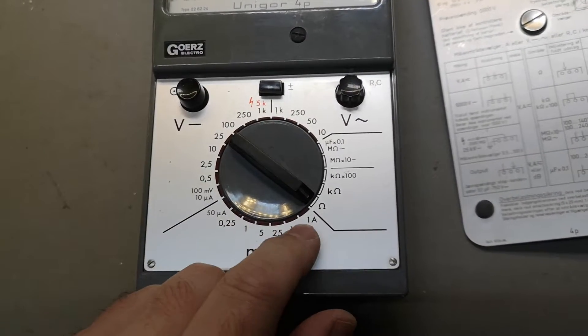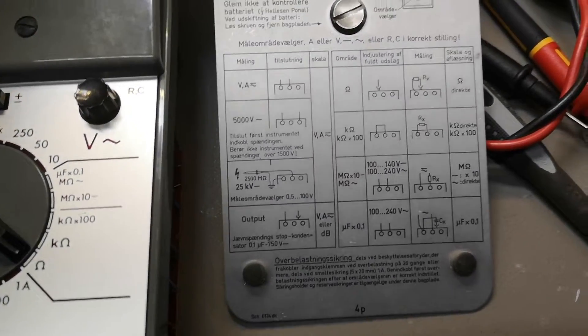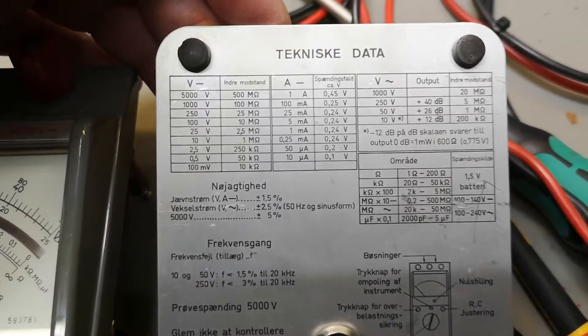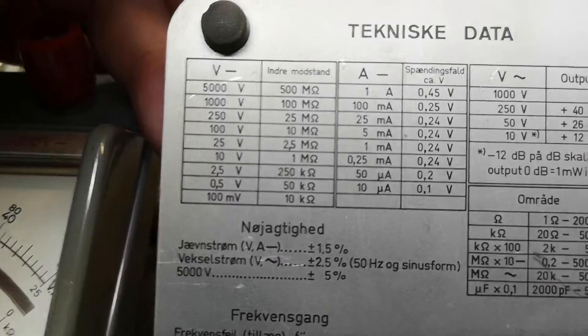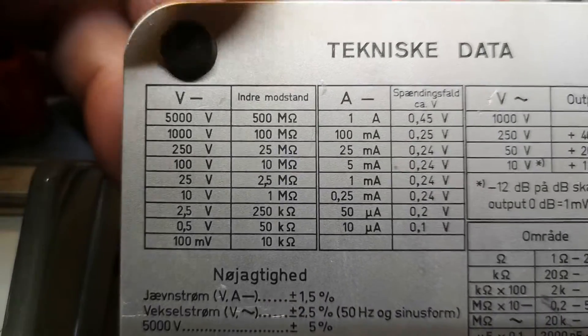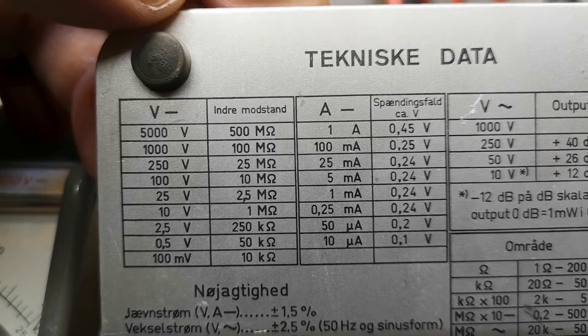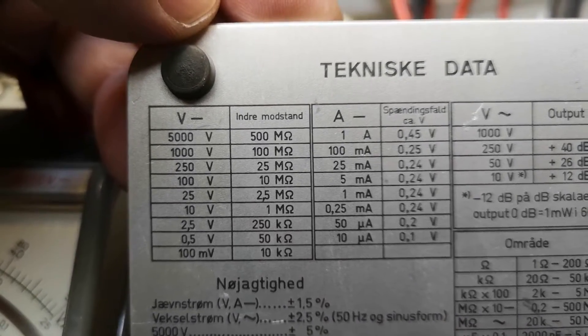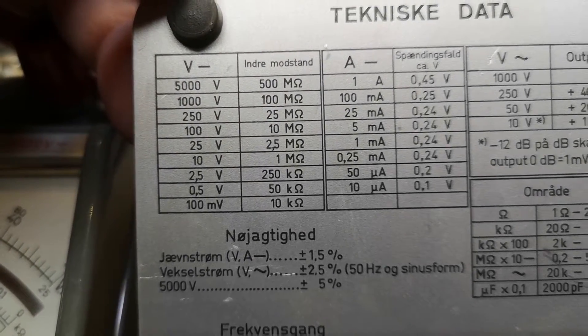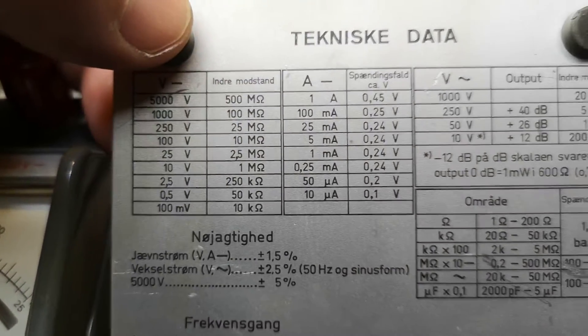If I look at the manual on the back plate, everything here is written. This model is very special when it comes to specifications, especially input impedance. Look at that: 500 megaohms at 5000 volts full scale. But if we go all the way down to 100 volt full range, it is 10 megaohms. That is really, really good.